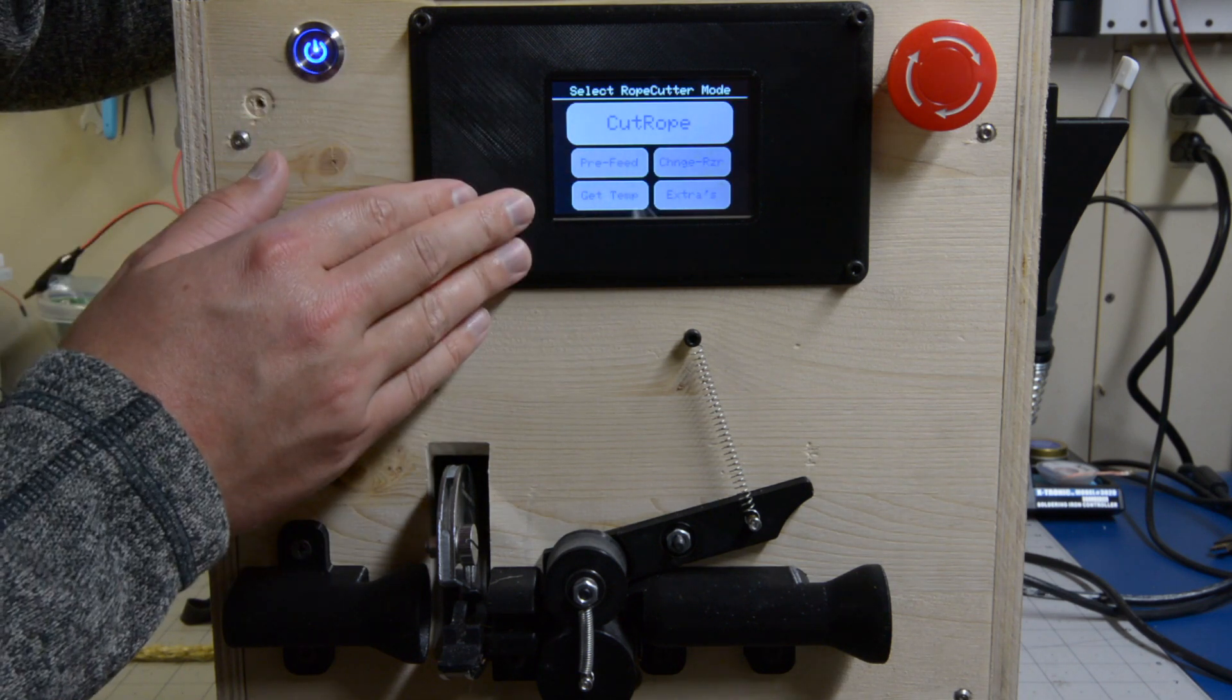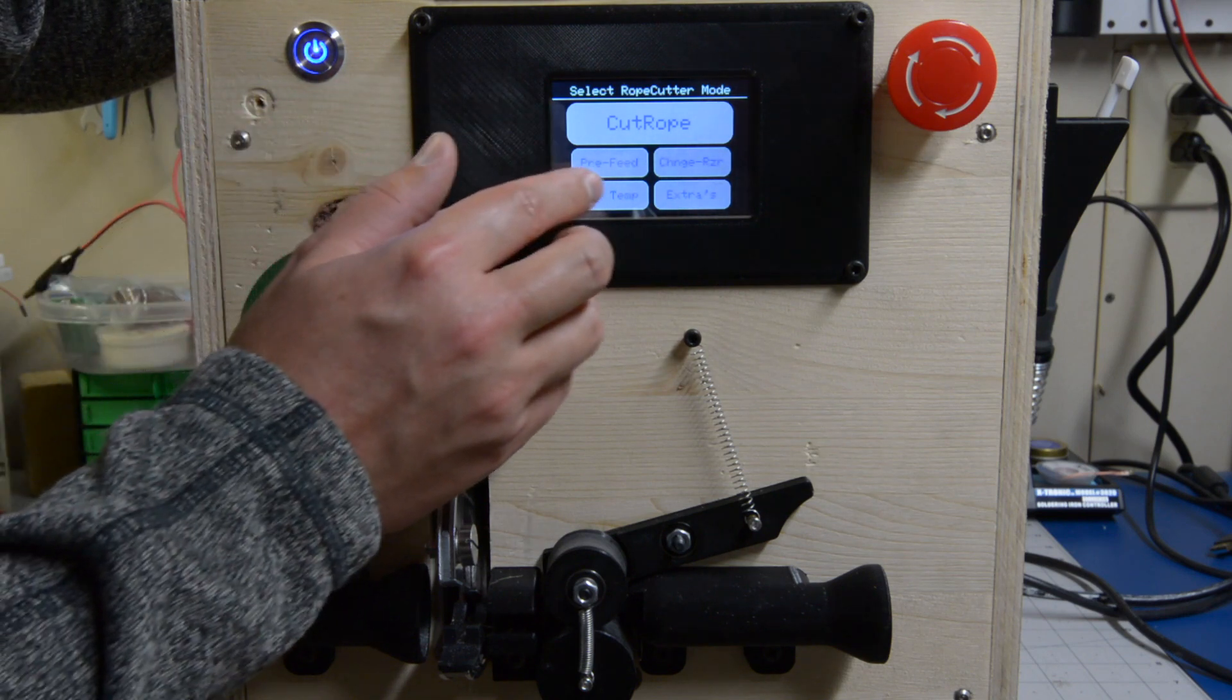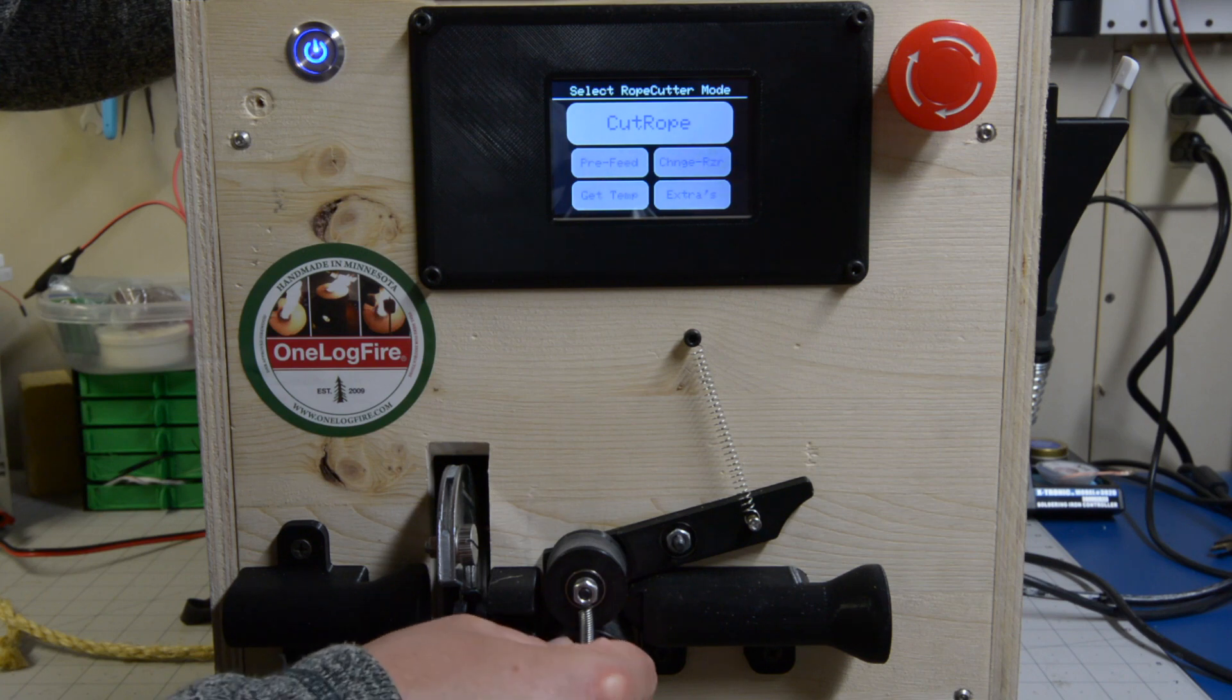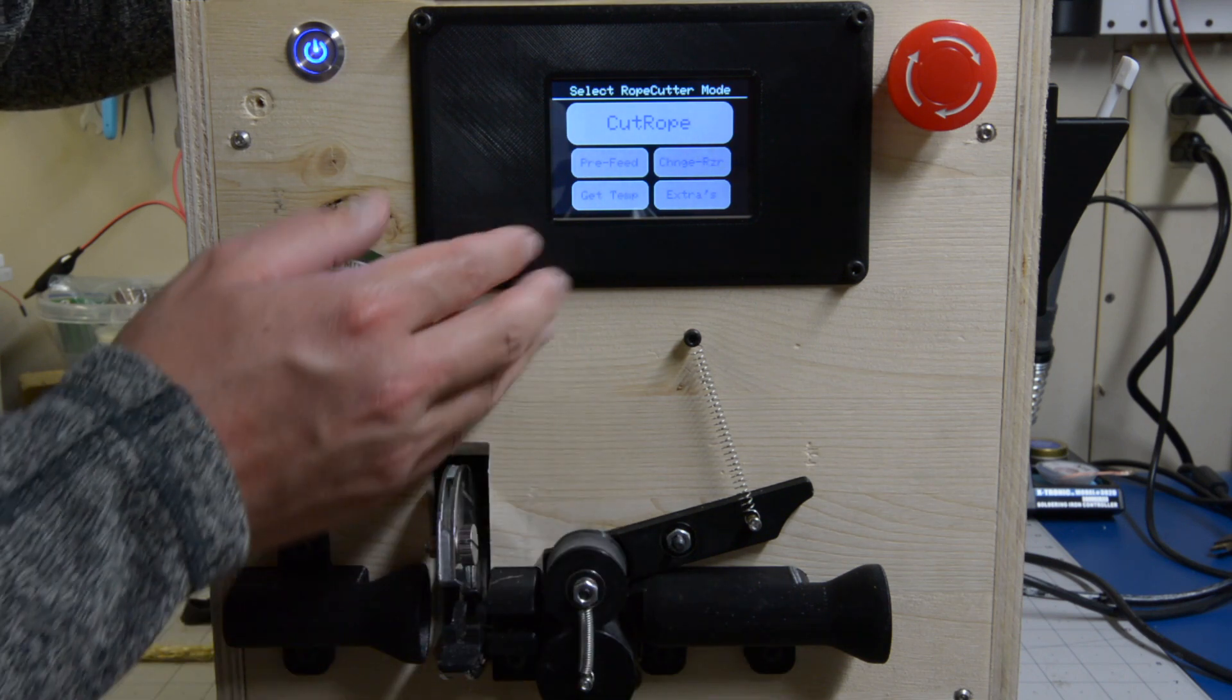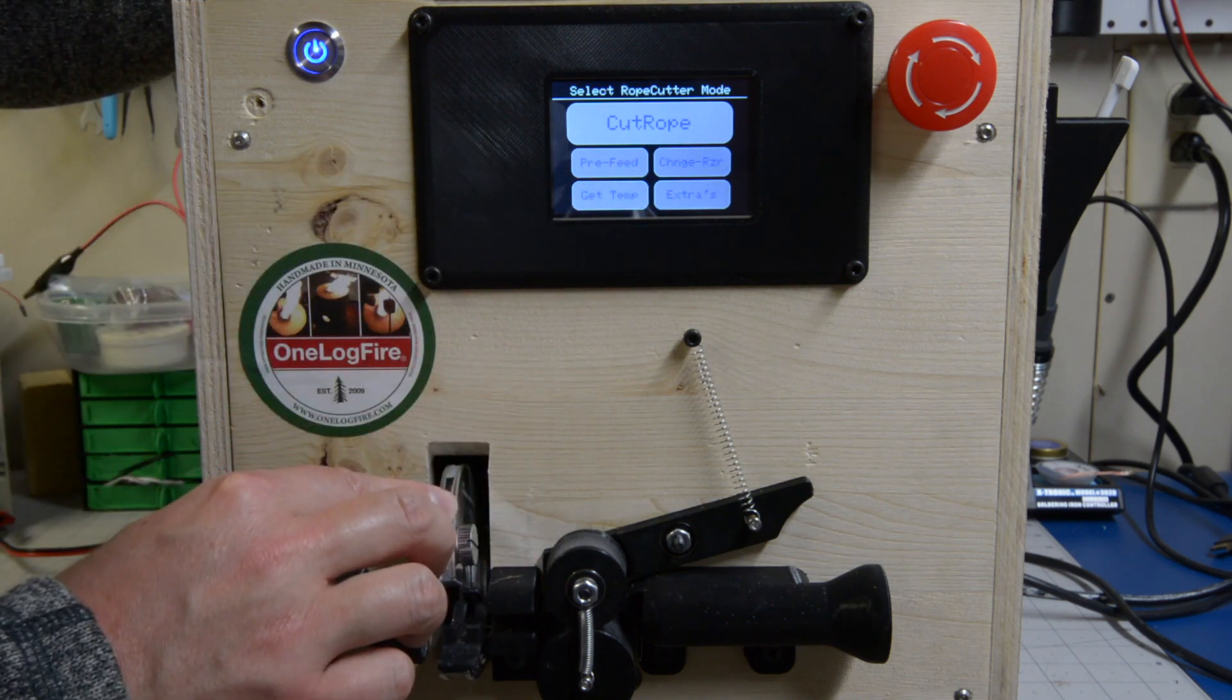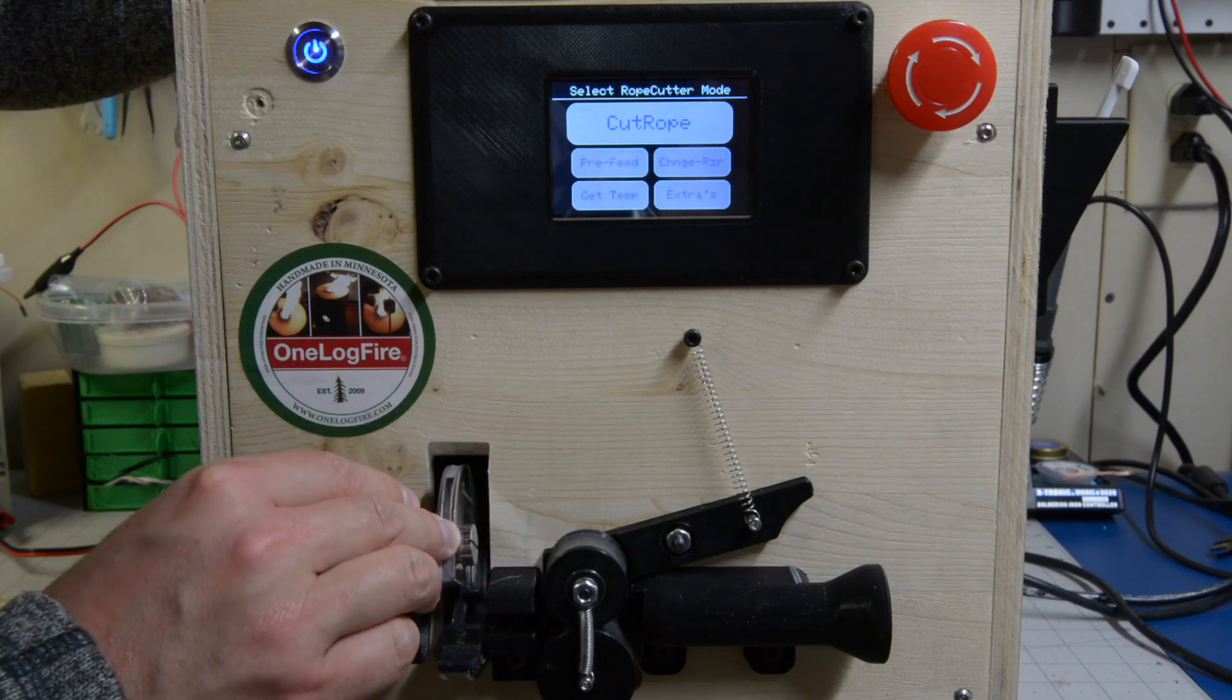Here are the additional options we added. Cut rope is our main cutting function. We have a pre-feed option which will spin the stepper motor the allotted amount of time that you have selected feeding the rope in to start. A change razor which will open the linear actuator all the way so the user can safely remove this razor and put a new one in when needed.